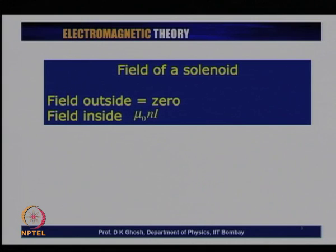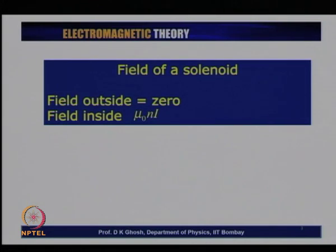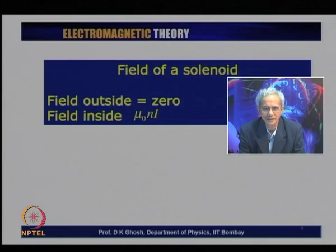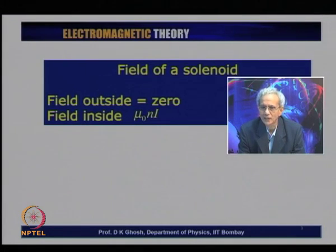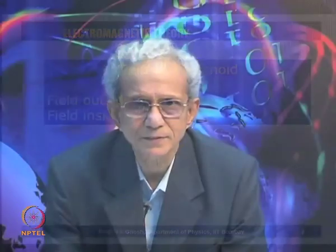The field due to a solenoid — this is rather easy to work out using Ampere's law. The field inside a solenoid, if you neglect its edge effect, namely if you assume the solenoid is infinitely long, is uniform and is given by μ₀nI. Its direction is along the axis of the cylinder — if you curl your hand so that your fingers follow the current, your thumb points in the direction of the magnetic field. Notice that the magnetic field inside a solenoid is uniform, but the magnetic field outside the solenoid is zero.